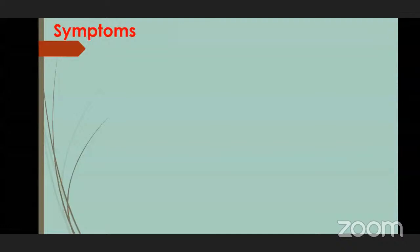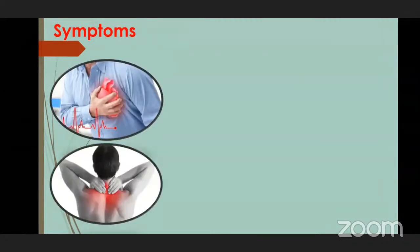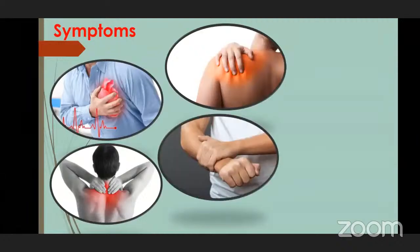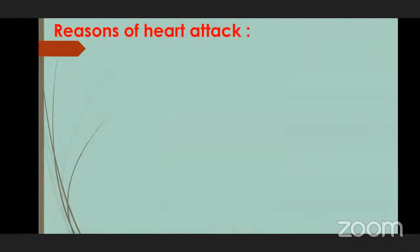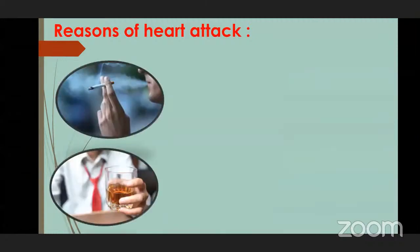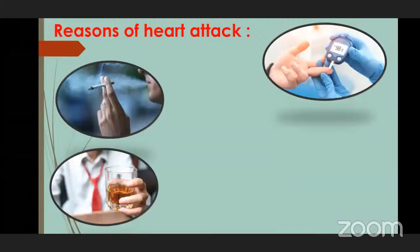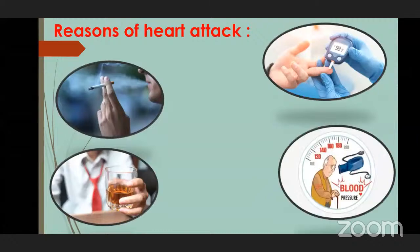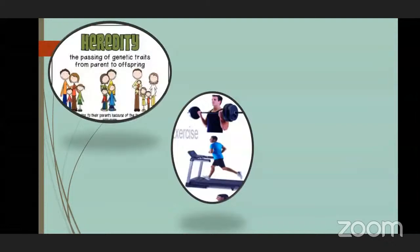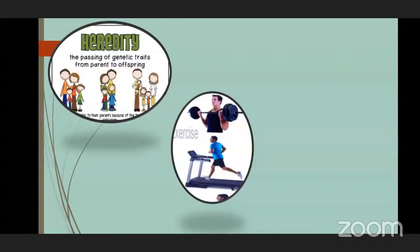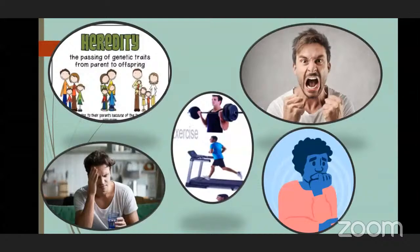Symptoms you should not ignore that may indicate heart disease: severe chest pain, pain in shoulder, neck and arms, cramps in the hands, uneasiness and tremors — shaking of hands and fingers. Reasons for a heart attack include smoking, use of alcohol, being diabetic, hypertension (high blood pressure), obesity, lack of physical exercise, heredity (from parent to child), and mental stress, anger, and anxiety.